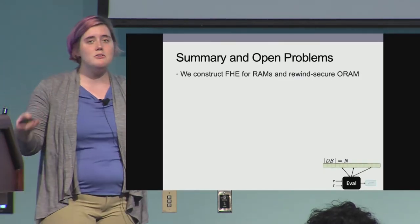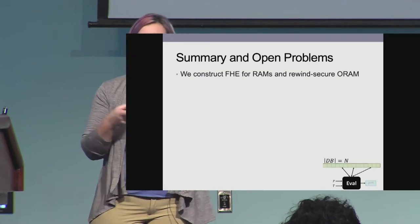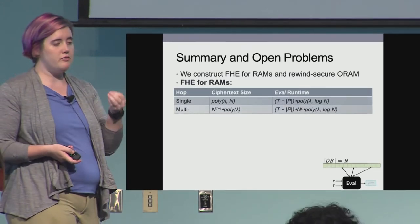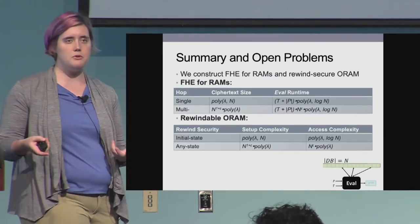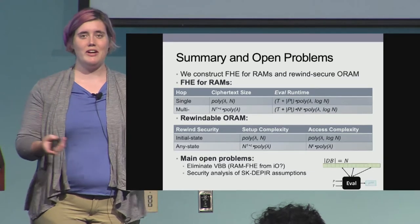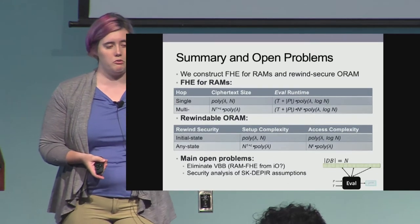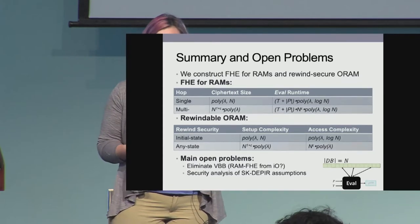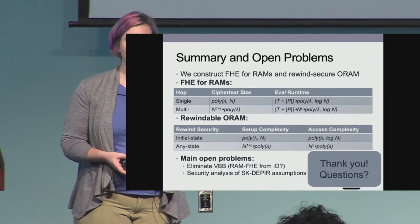In summary, this allows us to construct the first proof of concept FHE for RAM construction. To create that construction, we also introduce a variant of ORAM called rewindable ORAM. We provide single and multi-hop versions, as well as initial state rewindable and any state rewindable secure variants. There are open problems: can we reduce the assumptions we rely on? Is it possible to get RAM FHE from IO or something similar? Also, is it possible to contextualize the underlying noisy permuted Reed-Muller code assumptions that secret key D-PIR relies on? Thank you for listening.